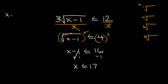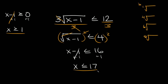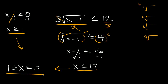Here we're going to say x minus one is greater than or equal to zero, then add one to both sides, so x is greater than or equal to one. So we get two answers: x is greater than or equal to one and x is less than or equal to 17. We can combine those into one line and write it as one is less than or equal to x is less than or equal to 17. That's our answer.